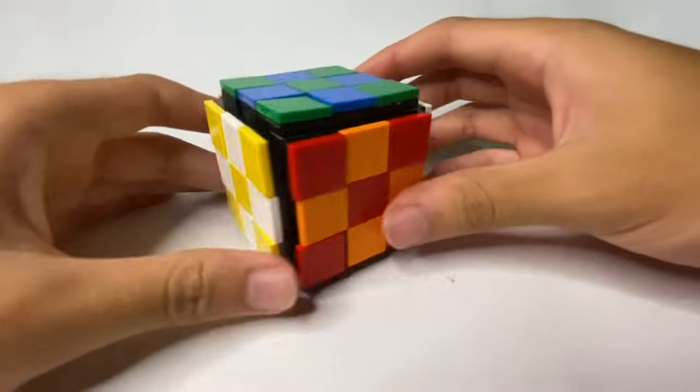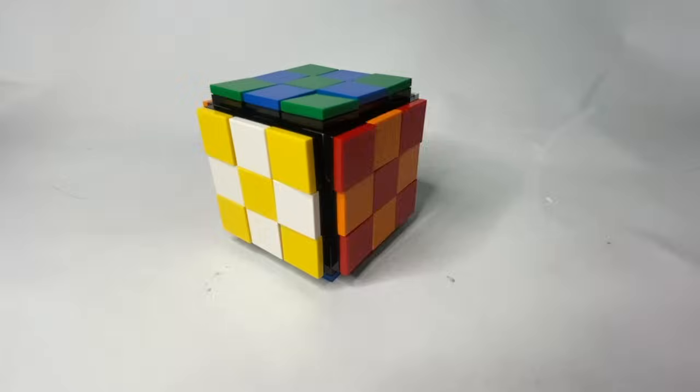There we go. So as you can see, this Rubik's Cube is a bit more stable. The pieces don't fall out all the time.